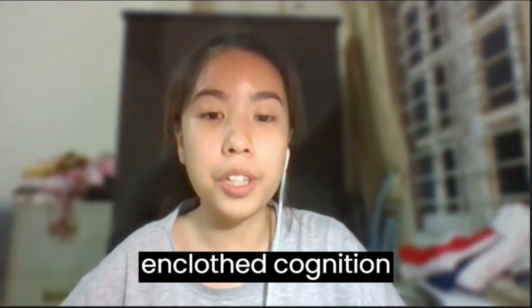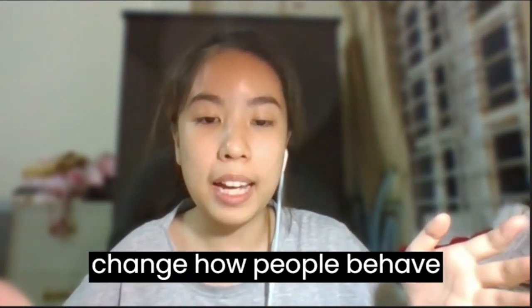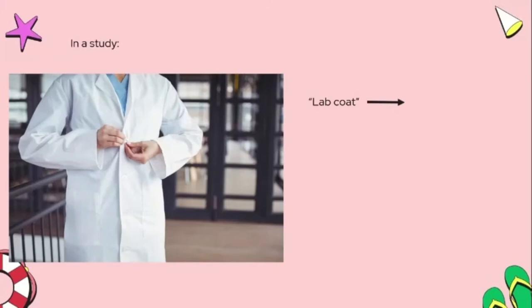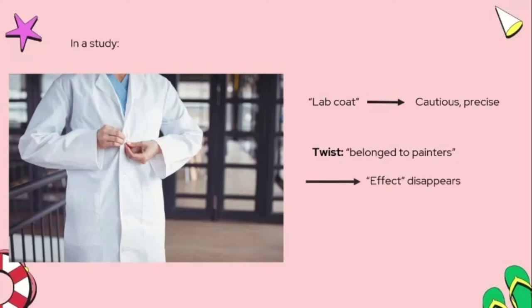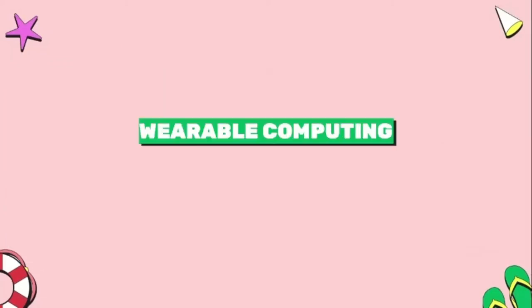Is it true that you are what you wear? An example of embodied cognition shows how the symbolic meaning of clothing changes how people behave. In one study, participants were asked to try on lab coats and perform tasks — they performed more attentively and precisely. But when they were told the coats belonged to painters, the effect went away. The responders translated the symbolic meaning of the clothing and altered their behavior accordingly.